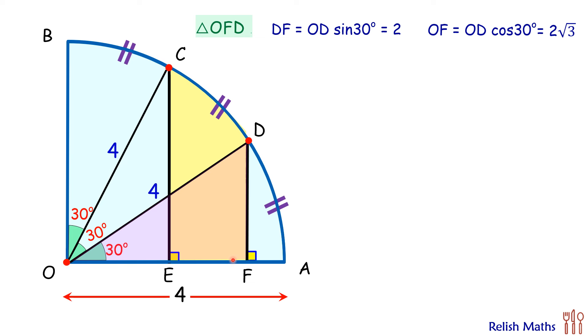Now for the triangle, this is your base and this is your height. So area of triangle ODF will be half base into height, which equals 2 root 3 cm square.